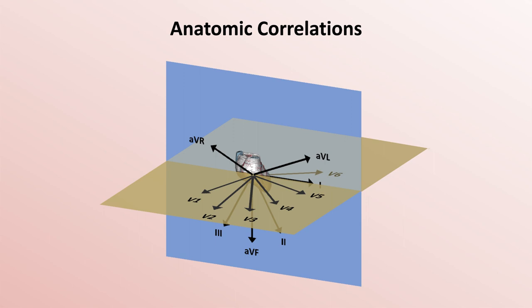Because of this, leads are often grouped anatomically. For example, leads 2, 3, and AVF are known as the inferior leads as they most directly evaluate the inferior wall of the heart.